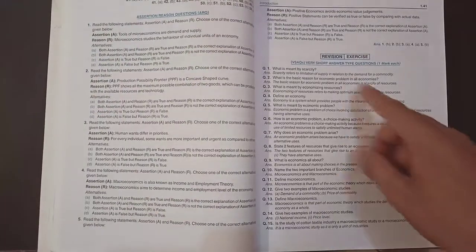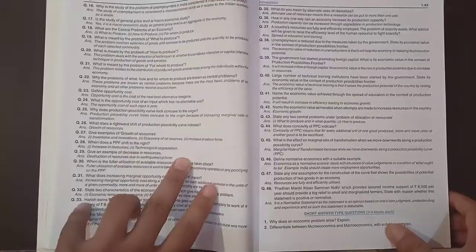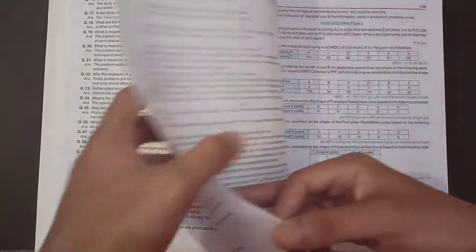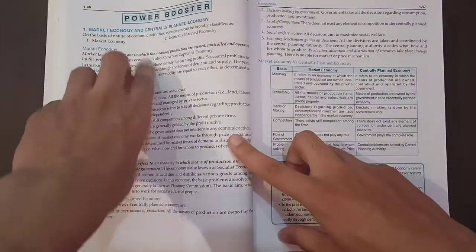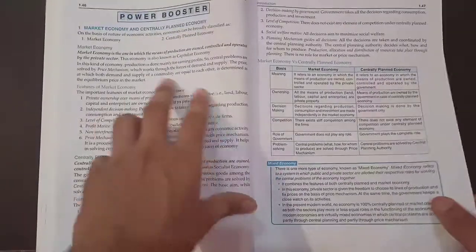Assertion-reason questions, very short answer type questions, one mark each. So if you bought this book, then you do not have to purchase any other book or question bank like Oswaal, Arihant, etc. Then we have Power Booster - some important topics related to Chapter 1, market economy, centrally planned economy. You can also read this.